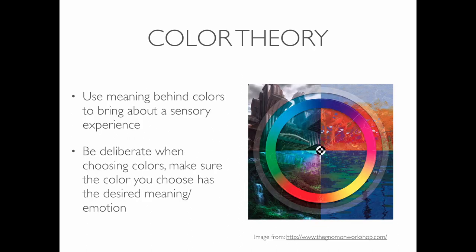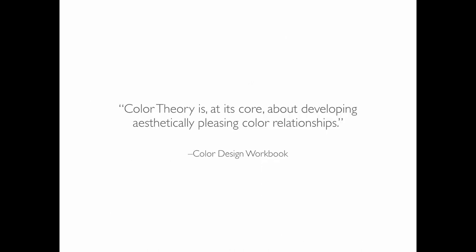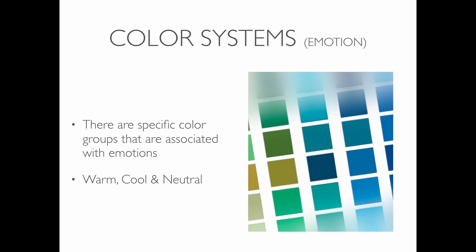Color theory essentially says that there's meaning behind every particular color we choose. As designers, we need to be aware and make deliberate decisions about why we're choosing something to be a particular color — that's going to have meaning in our overall design. Color theory is, at its core, about developing aesthetically pleasing color relationships. There are generally specific color groups associated with emotions: warm colors, cool colors, and neutral colors.